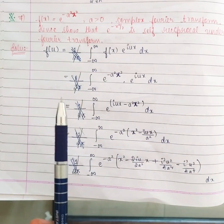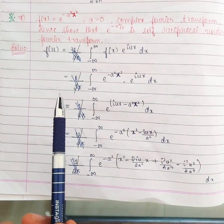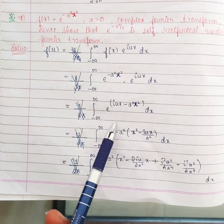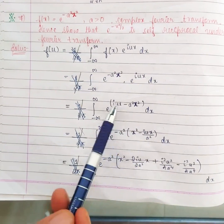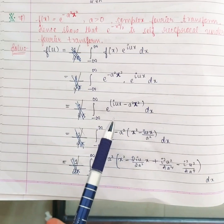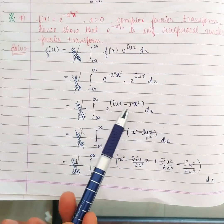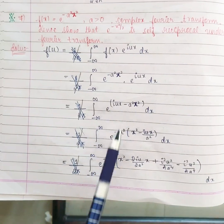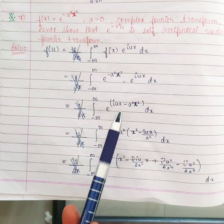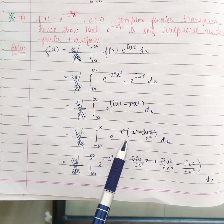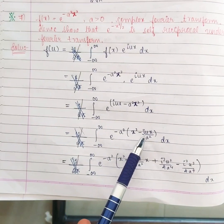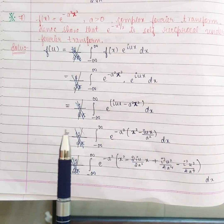Using e^a · e^b = e^(a+b), we combine the terms. We are integrating with respect to x only, so a is a constant. We take a² outside the exponent, giving us the expression inside the bracket as x² - (iu/a²)x.